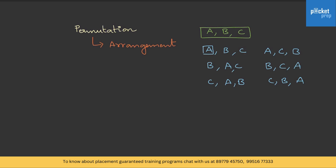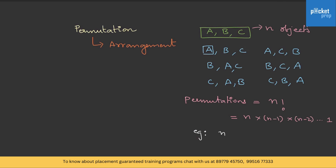It is very difficult to list out every possible arrangement whenever you have a set of n objects. So there is one general formula to identify the number of arrangements. Suppose we have n objects — A, B, C, and so on — then we can write permutations as n factorial, where factorial means n × (n−1) × (n−2) so on till 1. For example, in the above case n is 3, so permutations are 3! = 3 × 2 × 1 = 6.